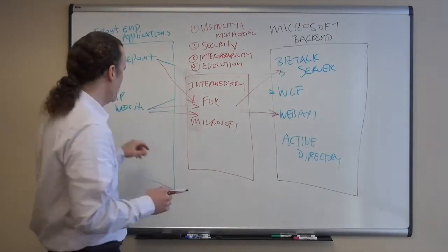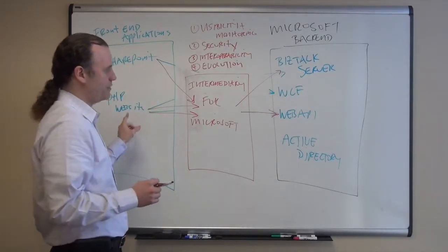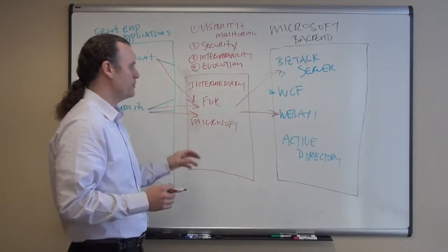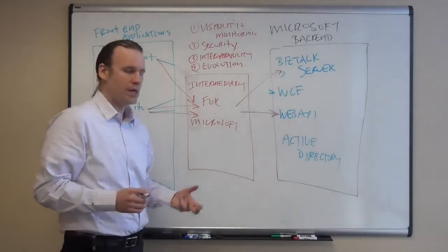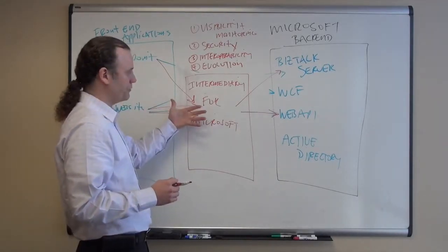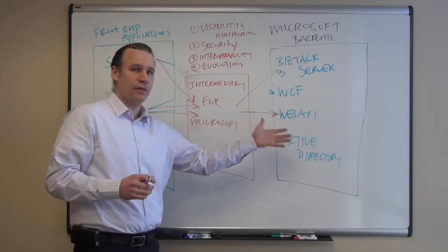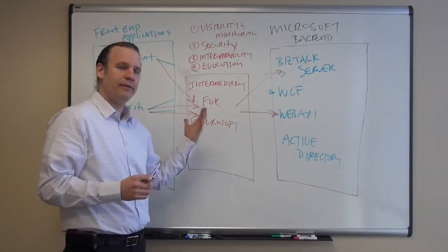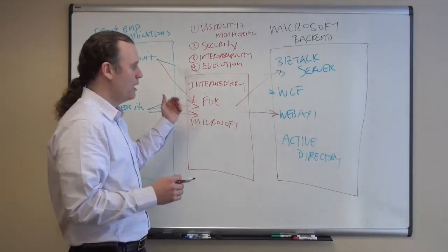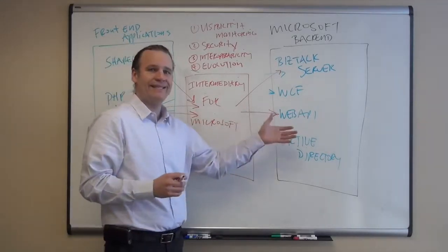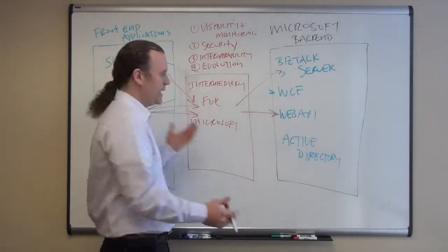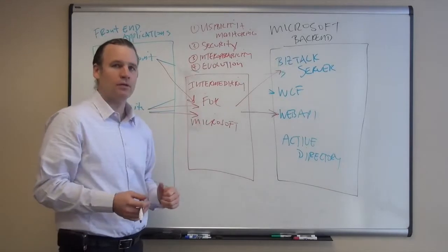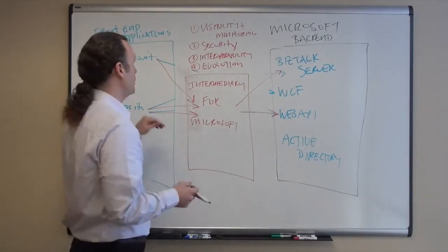Next one is interoperability. PHP now doesn't have to know how to talk to a Microsoft backend because it knows how to talk to Intermediary for Microsoft. Intermediary for Microsoft offers mediation capabilities. So it can actually support a particular type of technology on the front and a different technology on the back. So in this scenario, you can have PHP talking HTTP and basic auth to the front of Intermediary for Microsoft. But Intermediary for Microsoft can talk NetTCP and Windows security to the back. And each side does not need to know about the other. And so you can have very nice interoperability across the board. Very, very powerful feature of Intermediary for Microsoft.